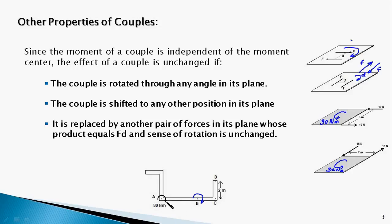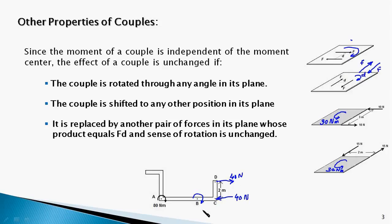Suppose you are also asked to replace this couple by two forces acting at points D and C, separated by a distance of 2 meters. The answer is yes — you can do it by applying horizontal forces of 40 Newtons. These two forces form a couple, and since the distance between them is 2 meters, the moment is 80 Newton-meters clockwise, so the effect remains unchanged. You have to be careful about the direction of the forces you apply at points D and C. Now that we've covered the basic properties of couples, let's go ahead and solve a few interesting problems.